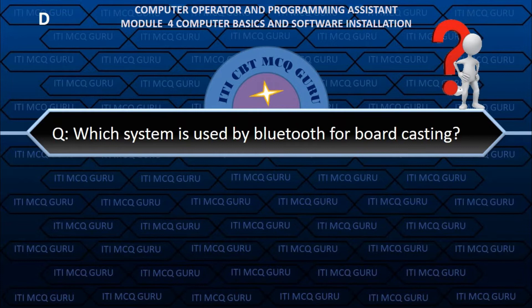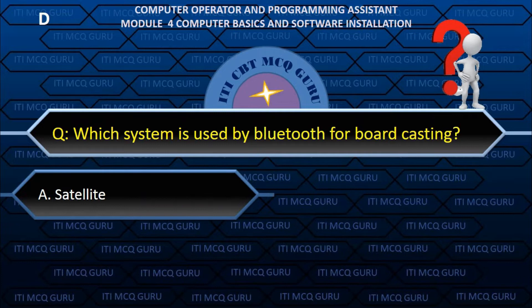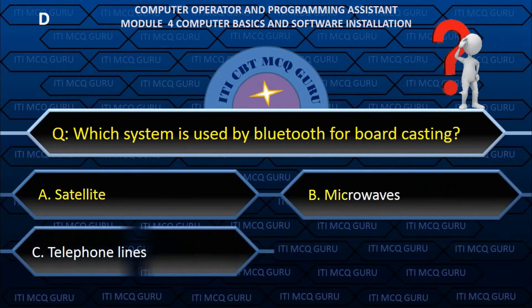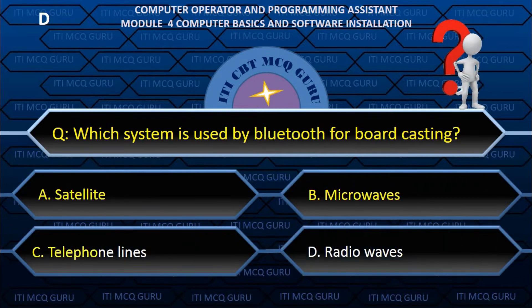Which system is used by Bluetooth for broadcasting? — B. Radio waves.